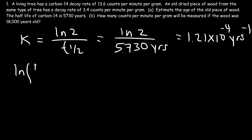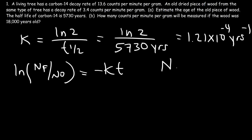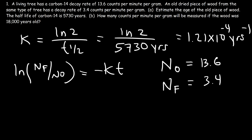Now we need to use the first-order decay formula: ln(N_final / N_initial) = −KT. In this equation, N_initial represents the initial amount — in grams, moles, or initial radiation — and N_final is the final amount of radiation. For the old piece of wood, at one point it was living, so the initial amount of radiation is 13.6 counts per minute per gram. At the present, the final amount of radiation is 3.4. So we have everything we need to calculate the age of the old piece of wood.